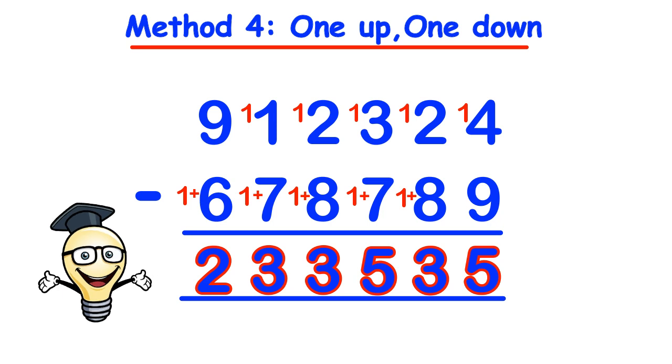So notice how in the original question we deliberately chose the bottom numbers to be greater than the digits in the top number to illustrate this example of the 1 up 1 down method. As long as you consciously remember that when we put the 1 down with the bottom numbers that we have to add them to those digits.